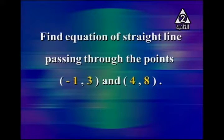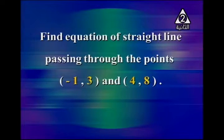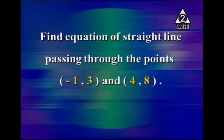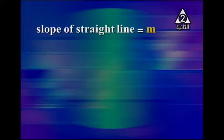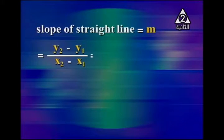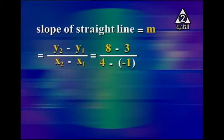Find the equation of the straight line passing through the points (−1, 3) and (4, 8). To find the equation you must know the slope and y-intercept. First find the slope: m = (y₂ − y₁) / (x₂ − x₁) = (8 − 3) / (4 − (−1)) = 5/5 = 1.